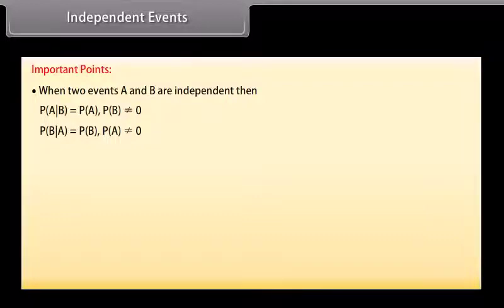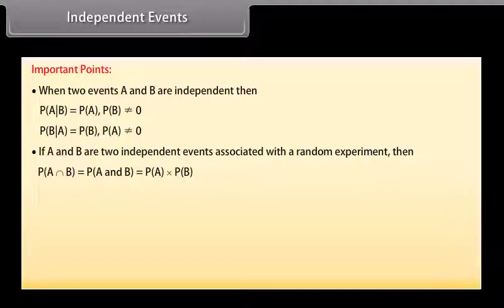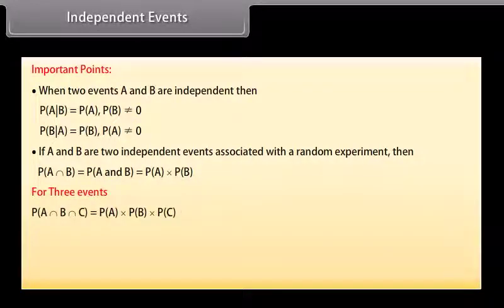If A and B are two independent events associated with a random experiment, then P(A∩B) = P(A)·P(B), and similarly P(A∩B∩C) = P(A)·P(B)·P(C).